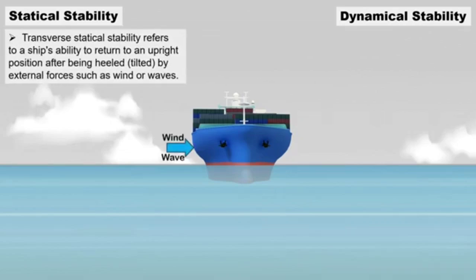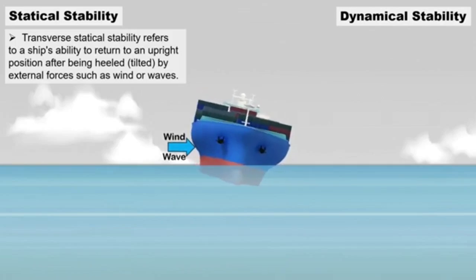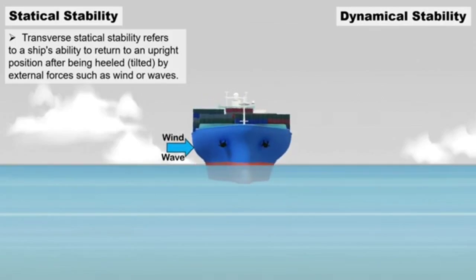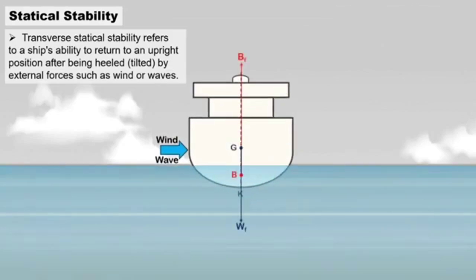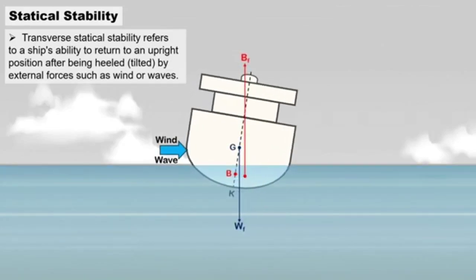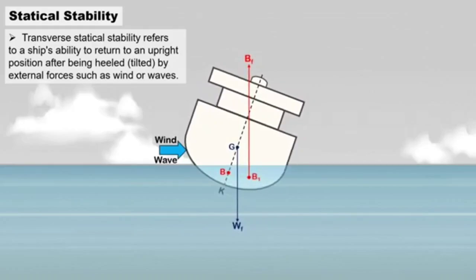Statical stability, or transverse statical stability, refers to a ship's ability to return to an upright position after being heeled or tilted by external forces such as wind or waves. This form of stability focuses on the ship's initial response to heeling, and is primarily concerned with the relationship between the center of gravity and the center of buoyancy.